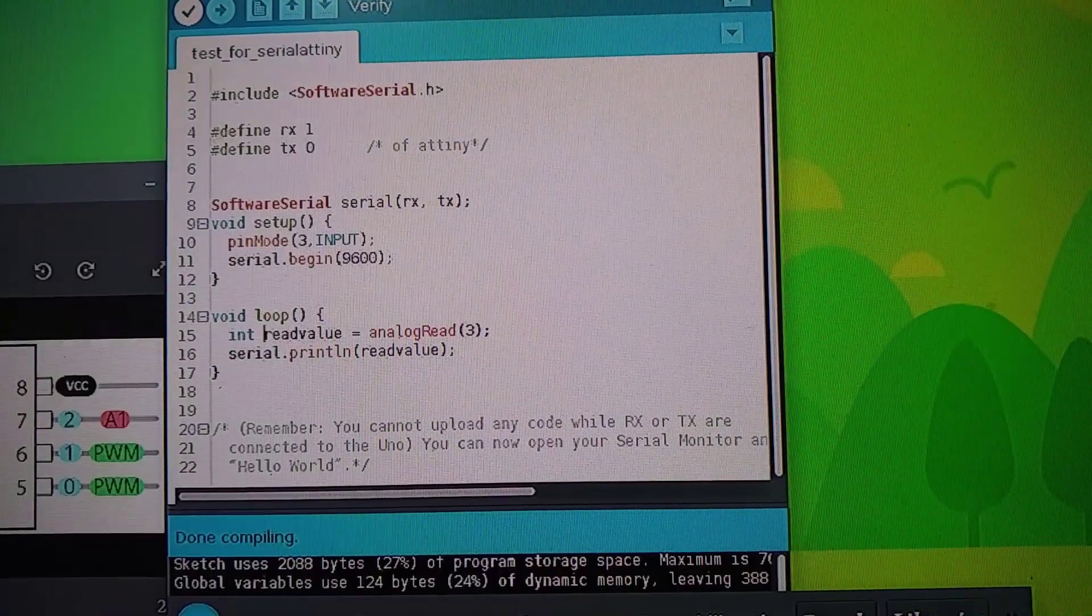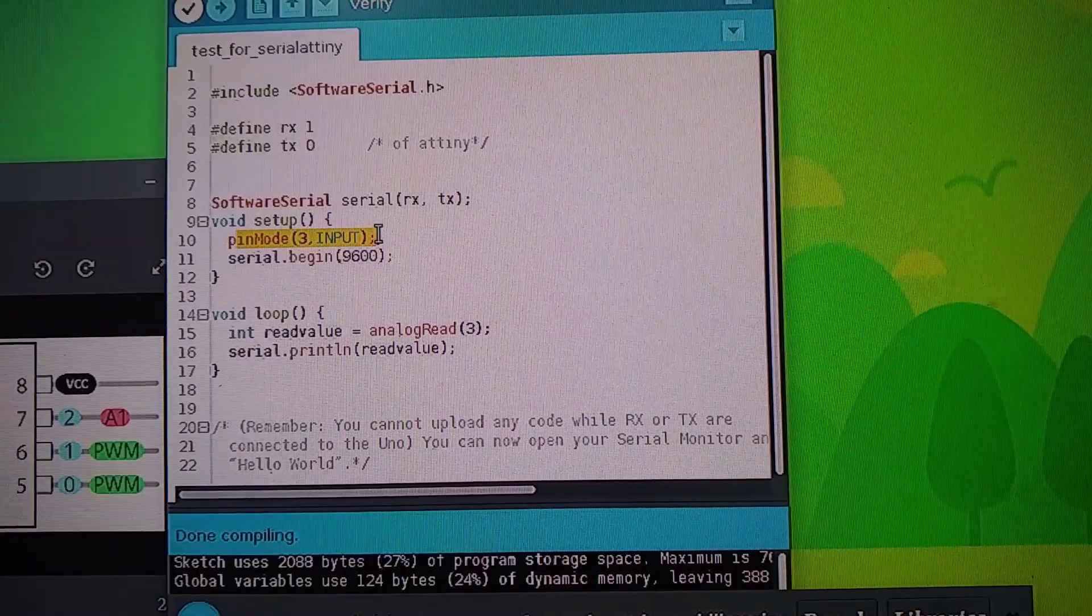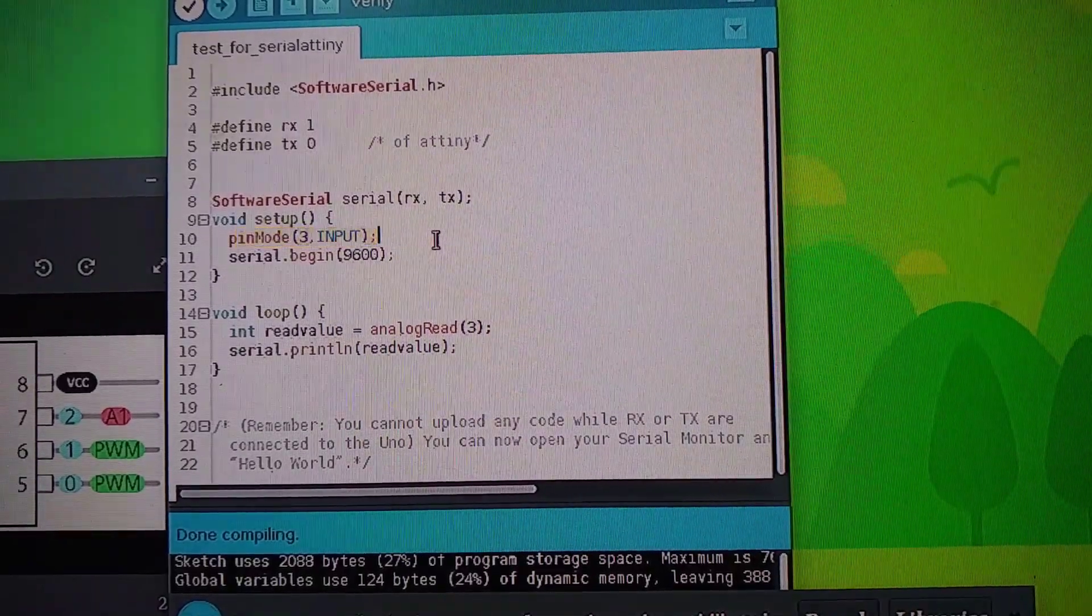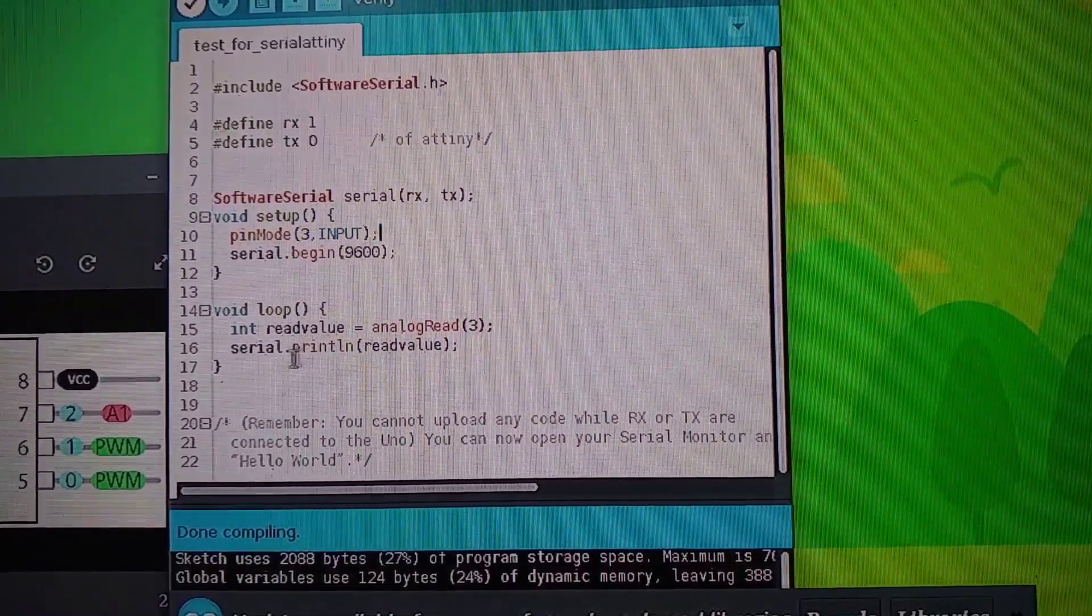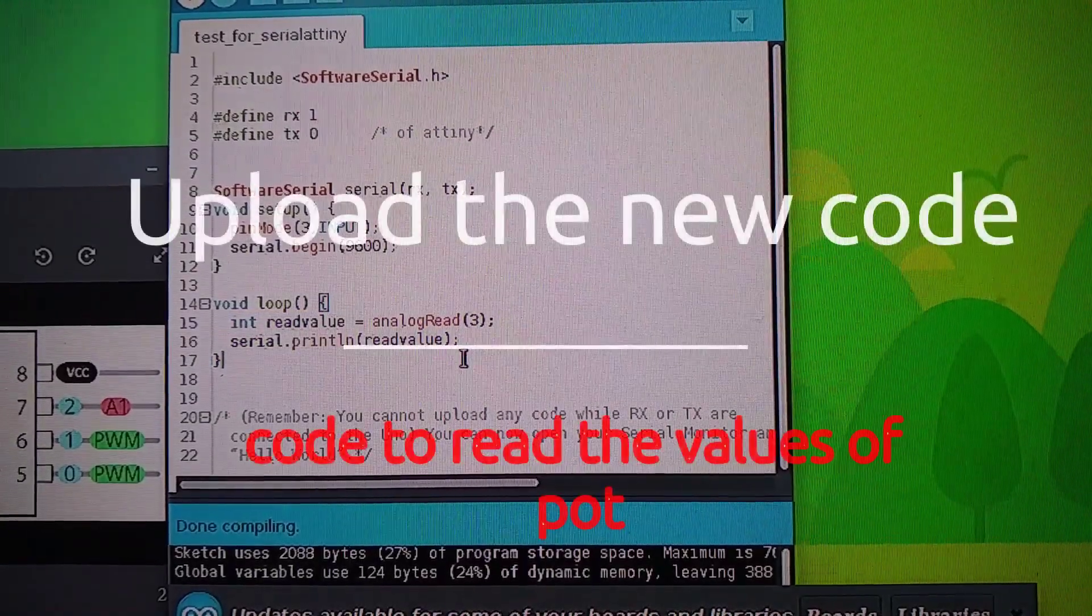Now let's go and check it. I have made a few changes here. You can see we are going to read the digital pin 3 here. I have set the digital pin 3 as input. And we will be reading it right here. So let's go and check it out.